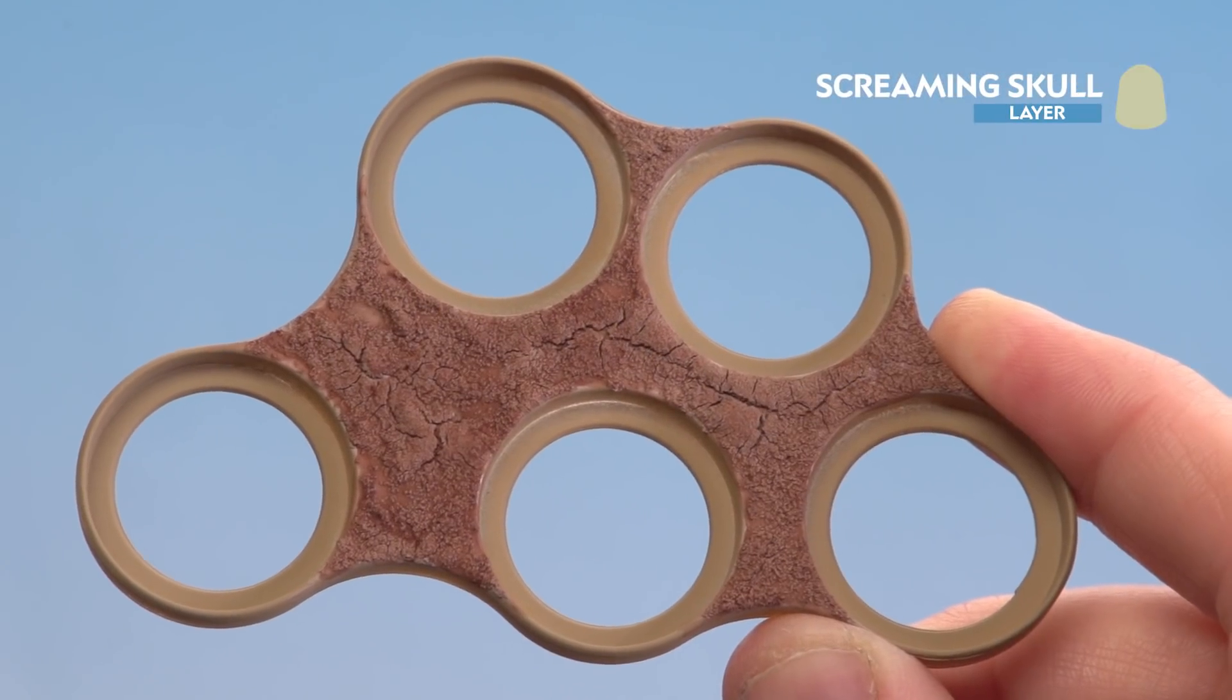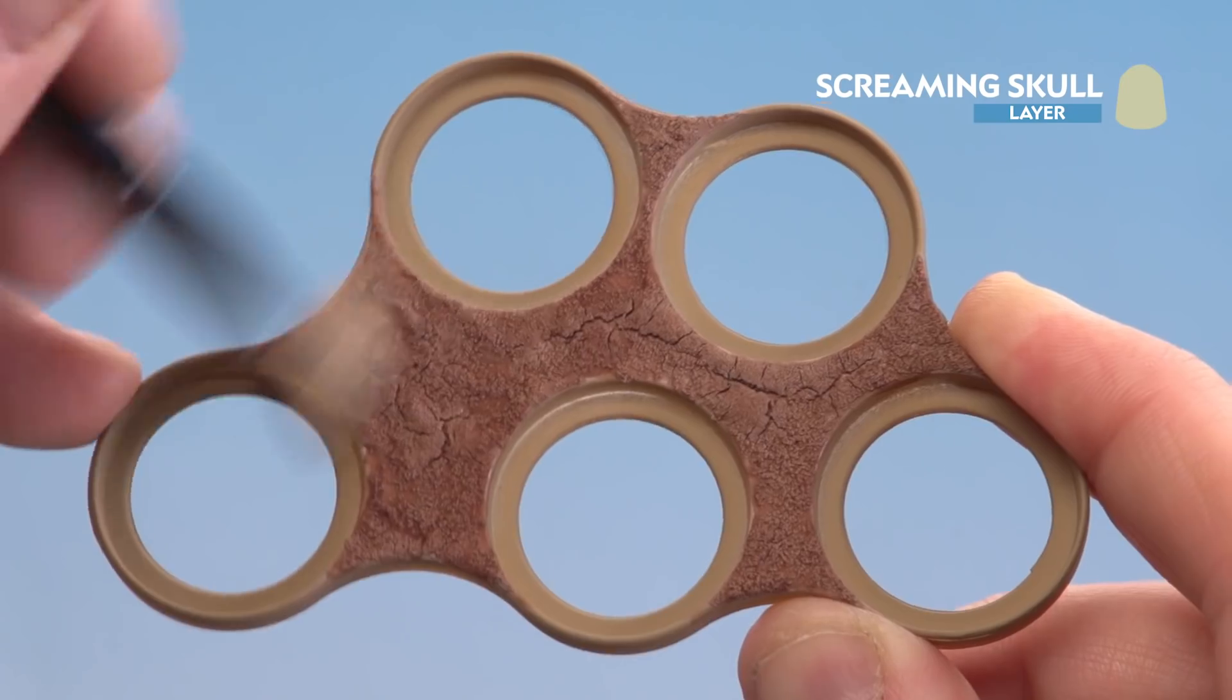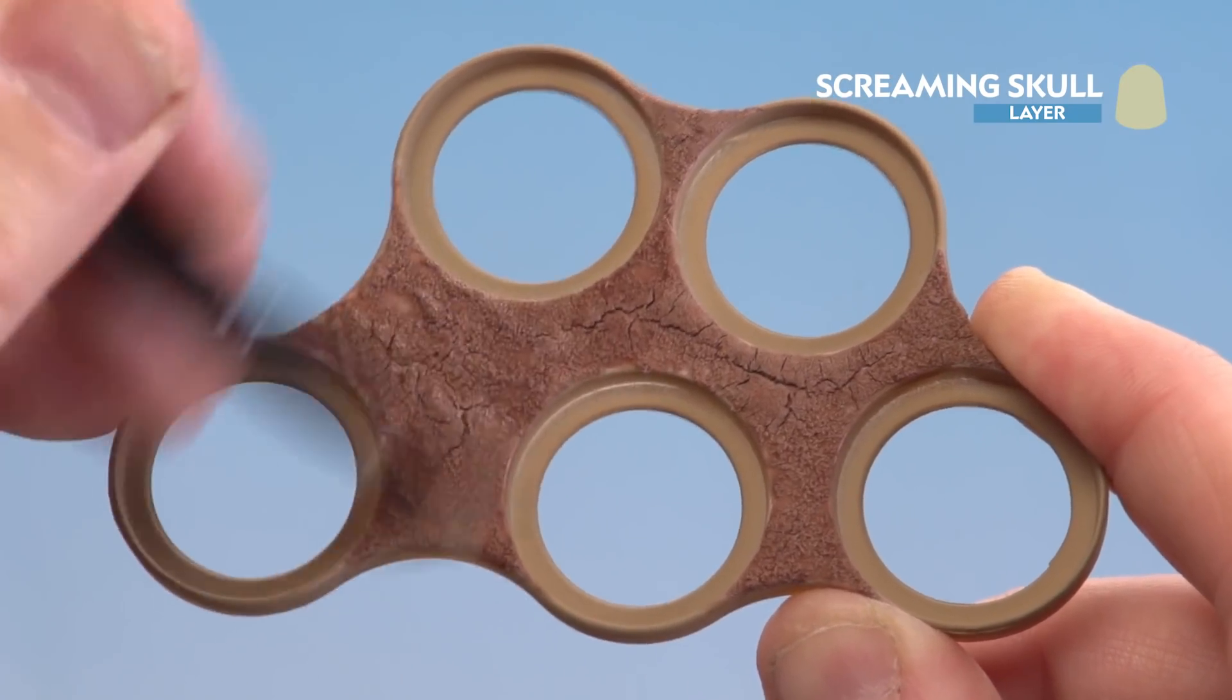With the shade now applied and dry, I'm going to dry brush Screaming Skull just on the raised edges. That's only on the areas that have texture.